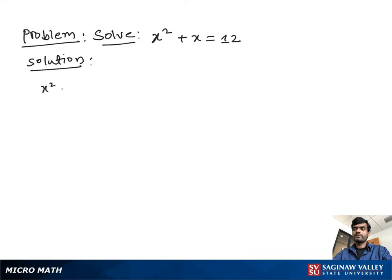Solve x square plus x equal to 12. What we do first, we bring all the terms to the left side and make the right side 0, so we write x square plus x minus 12 equal to 0.